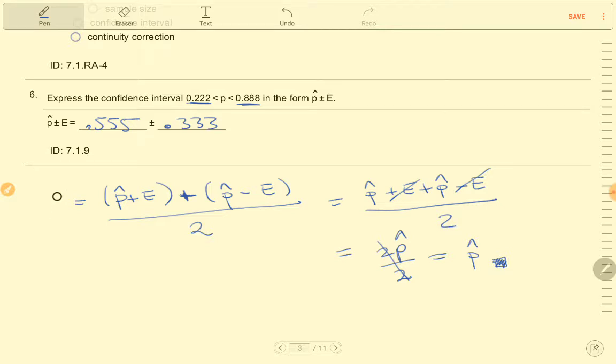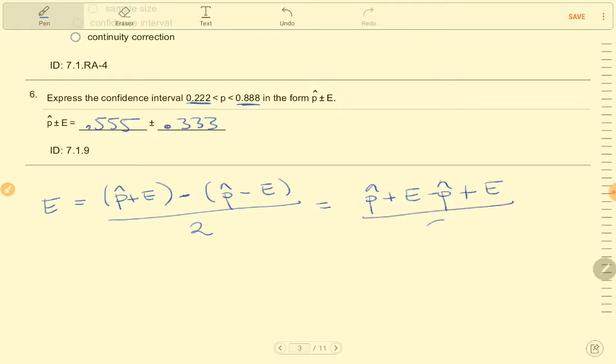Now E, let's change that to a minus, and then you'll have p hat plus E minus p hat plus E over 2. Well this time I have a p hat and a minus p hat so I end up with 2E over 2 which equals E.